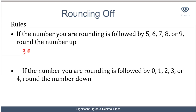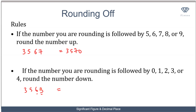For example, if I have 3567 and I'm told to round to the nearest tens, I look at the units digit which is 7. Since 7 is greater than 5, I change it to zero and increase the preceding digit by one, giving 3570. Now if instead I have 3563, the rule says if the number is followed by 0, 1, 2, 3, or 4, round down. Since 3 is not up to 5, I change it to zero and leave the rest, giving 3560.